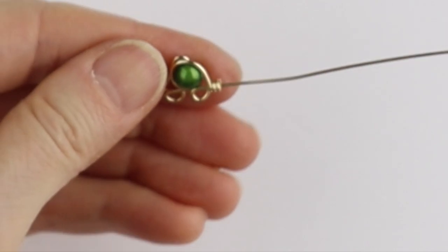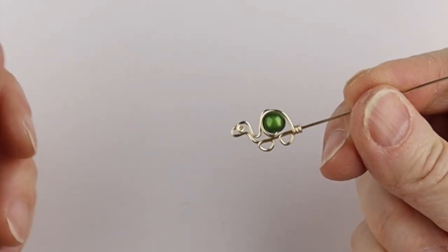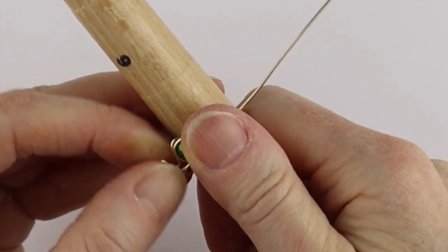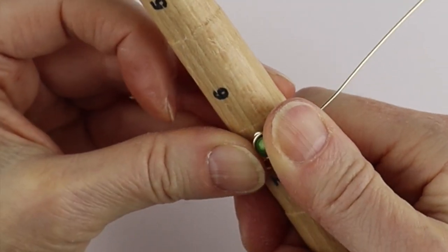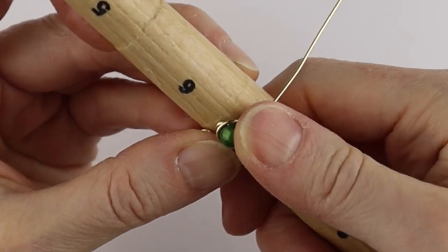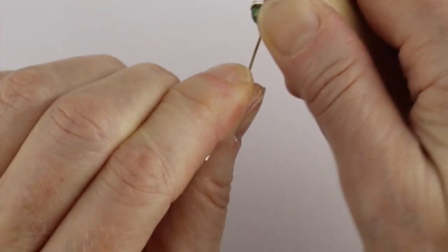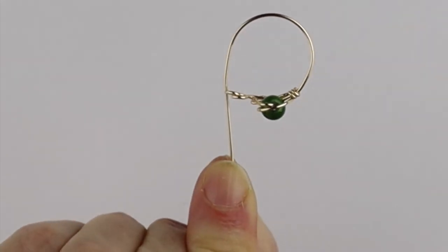We can just pinch that in a little bit. Then we're going to get the ring mandrel. If you don't have a ring mandrel just use a marker. Place it on the size you want, push it in with your thumbs to round it out, then take this wire and bring it all the way around.